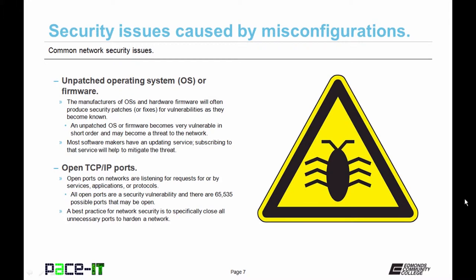An unpatched operating system or firmware will become a major security issue quickly. Manufacturers of operating systems and hardware firmware will often produce security patches or fixes for vulnerabilities as they become known. An unpatched OS or firmware becomes very vulnerable in short order and may become a threat to the network. Most software makers have an updating service, and subscribing to that service will help mitigate the threat.